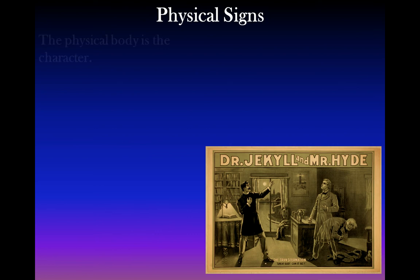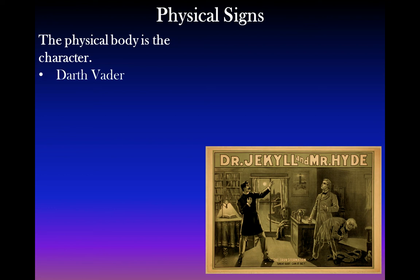Let's also look at physical signs — understanding that the physical body is part of the character, and things done to the body represent the character. A classic example is Darth Vader. Darth Vader is originally Anakin Skywalker, but Anakin becomes so corrupted with the dark side of the force that he eventually becomes more machine than human — he's barely human. It's only when Darth Vader begins to return to the light side of the force that we get to see his face. He takes off the mask and we start to see him as human again, so the body is representative of the character.